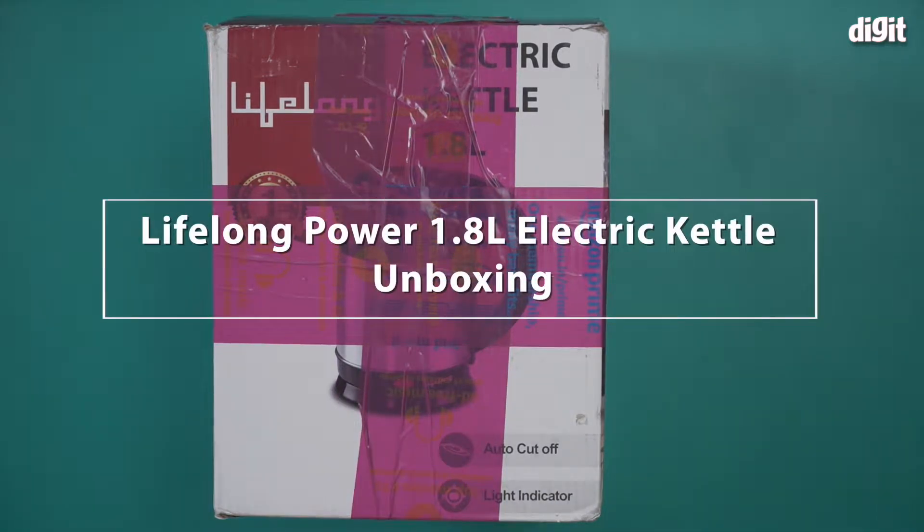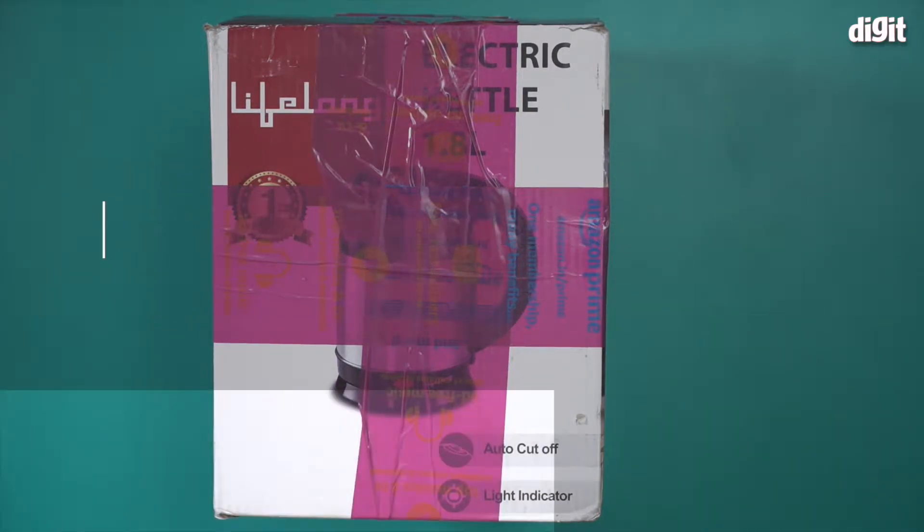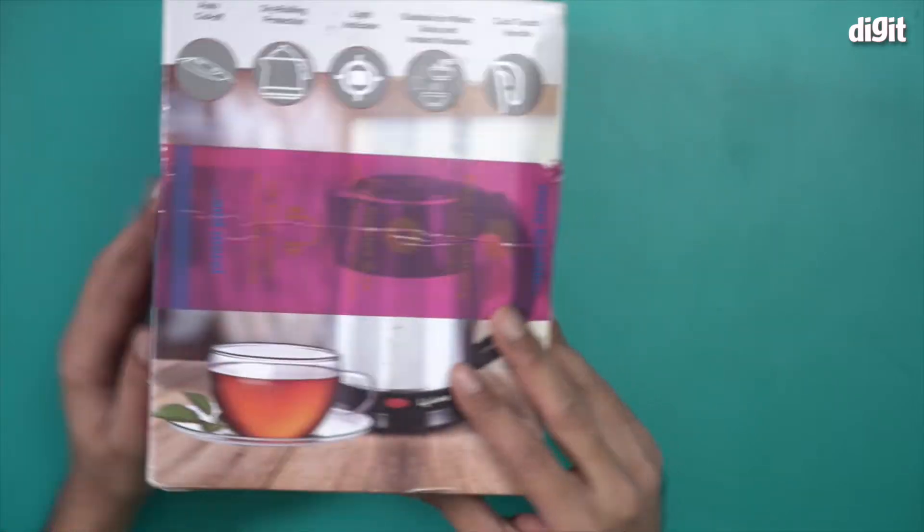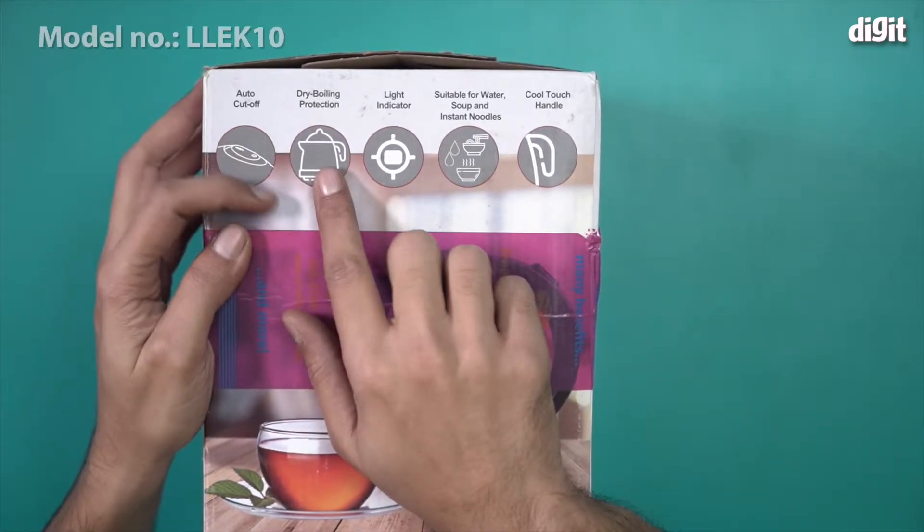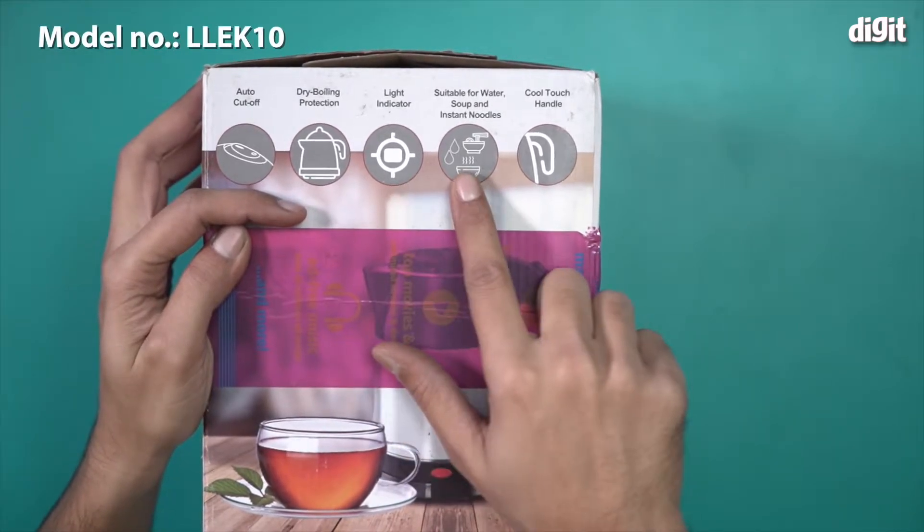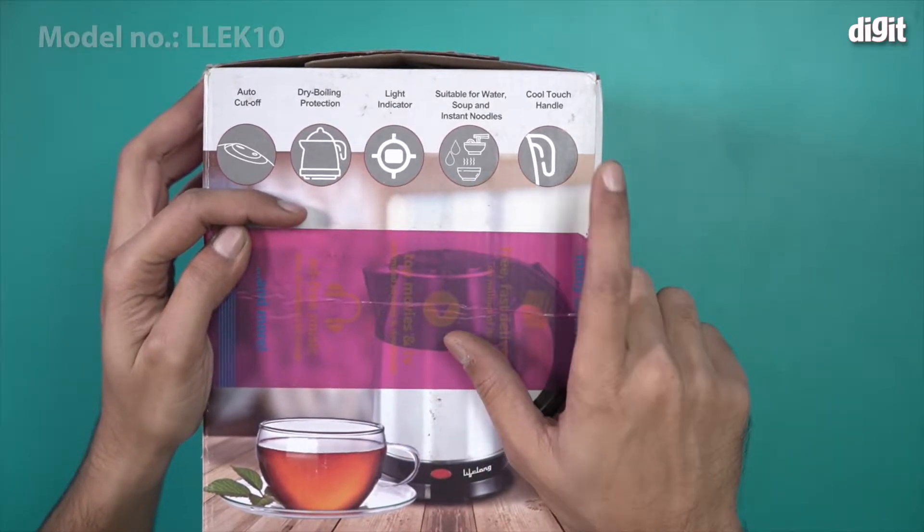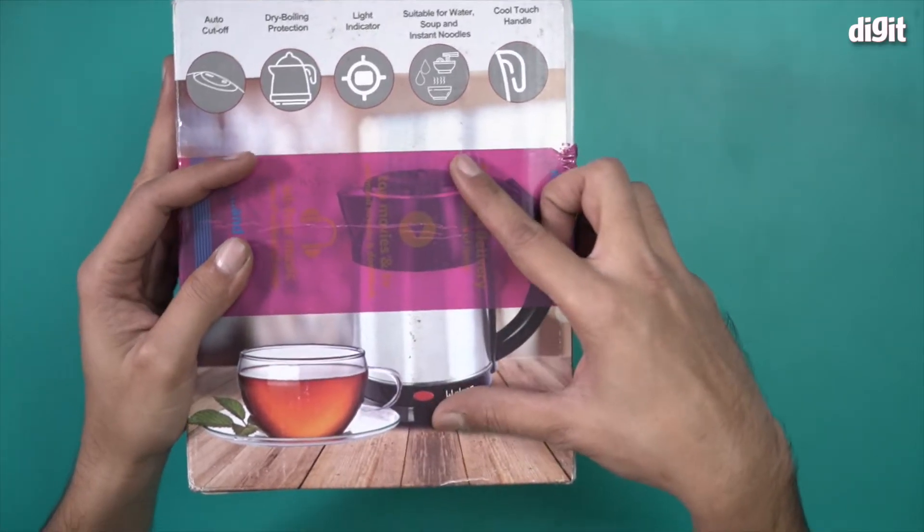Hello and welcome to the unboxing of the Lifelong Power 1.8 liter electric kettle. There's information on the box including auto cut-off, dry boiling protection, light indicator, suitable for water, soup, and instant noodles, cool touch handle, and there's also an image of the kettle.